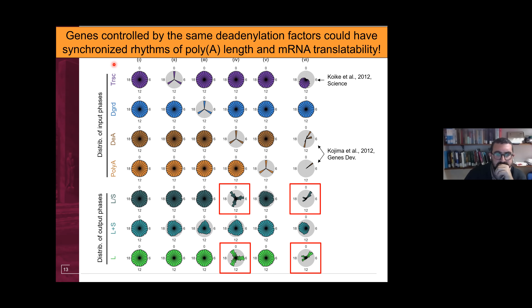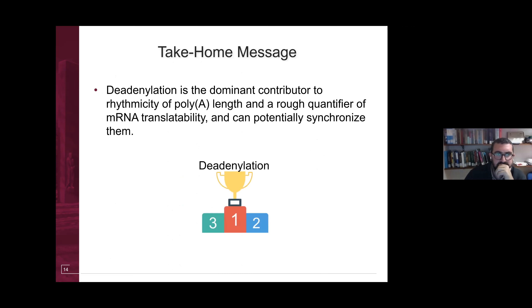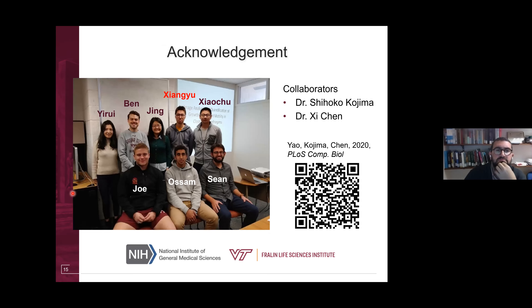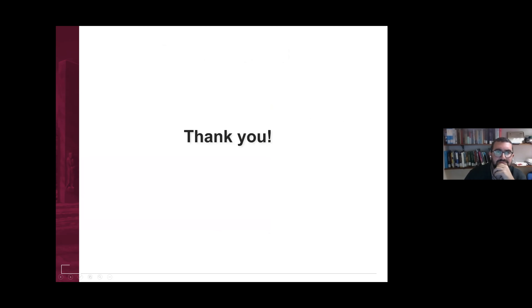To summarize, our model shows that de-adenylation is the dominant contributor to rhythmicity in poly-A tail length and a rough quantifier for mRNA translatability, and it is so strong that it can potentially synchronize these rhythmicities. The graduate student Xiaoya did the modeling work; Shihoko Kojima is the experimental collaborator whose previous study motivated this modeling study. Please scan the barcode to check out our paper.